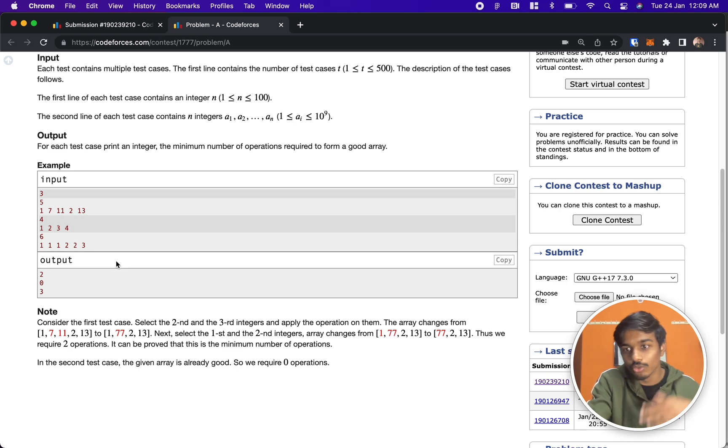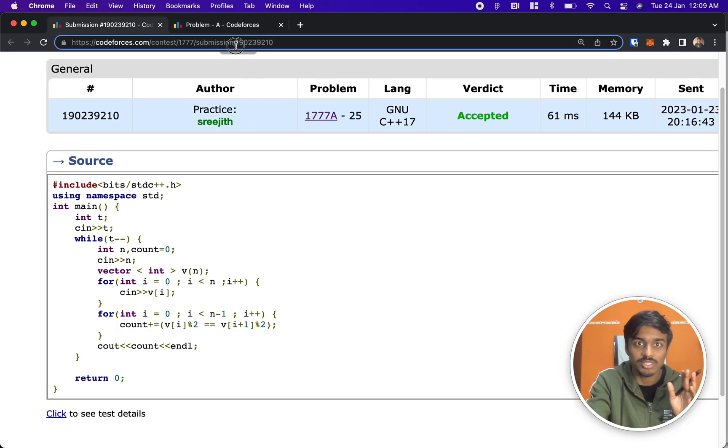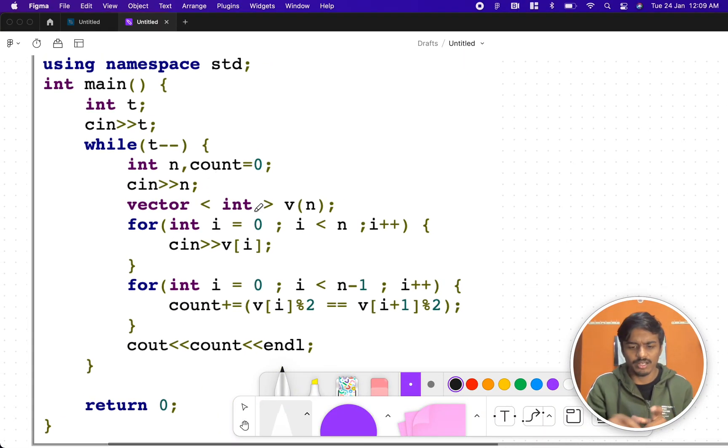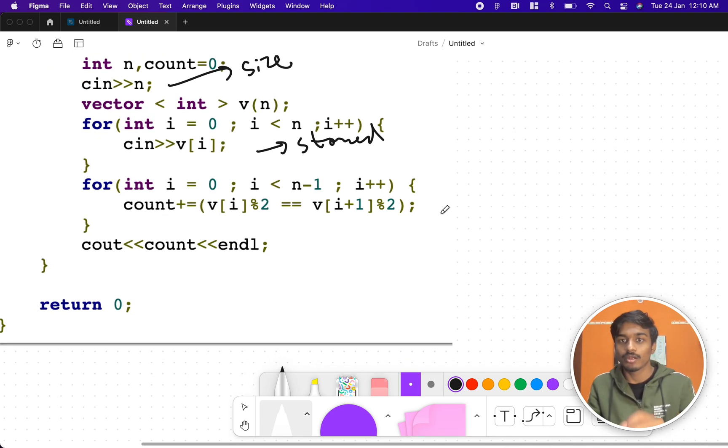So now let's quickly go through the solution on how did I solve it. I'll just quickly walk you through this. This is the solution number. If you want, you can refer this. Let's go. Now we take the input numbers. This is the size we took. We stored these numbers in a vector.